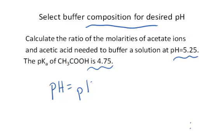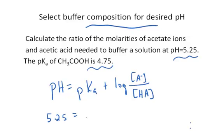pH equals pKa plus the log of the initial concentration of the anion of the acid divided by the weak acid. And so if the pH that you want is 5.25 and the pKa you know is 4.75,